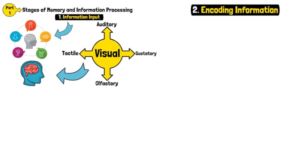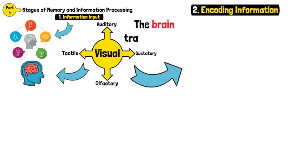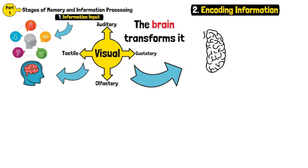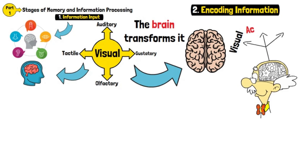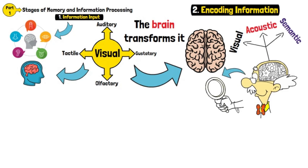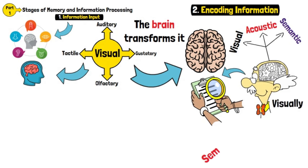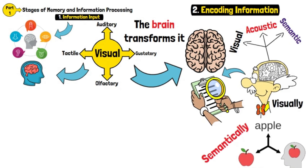Encoding Information: Once input is received, the brain transforms it into a format it can store. Encoding can be visual, acoustic, or semantic. For example, you might encode a list of words visually by remembering what they looked like, or semantically by understanding their meaning.